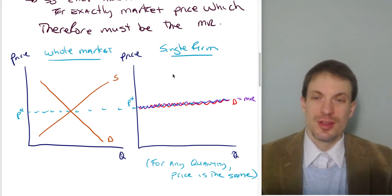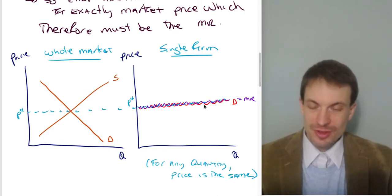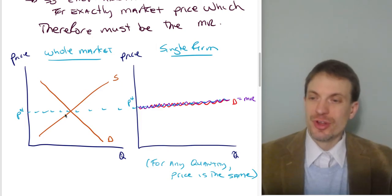And the individual single competitive firm is just going to stare at this price and make their decision by comparing their marginal cost curve to this market price. But what's ultimately going to happen?